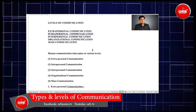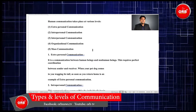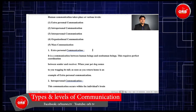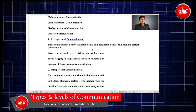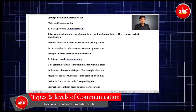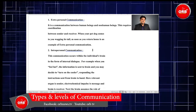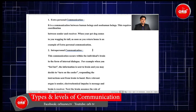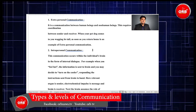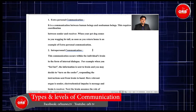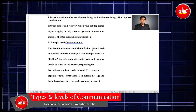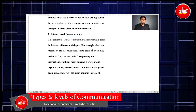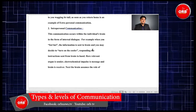Levels of communication: Human communication takes place at various levels — extrapersonal communication, intrapersonal communication, interpersonal communication, organizational communication, and mass communication. Extrapersonal communication is communication between a human being and a non-human being, requiring perfect coordination between sender and receiver. For example, when our pet dog comes to you wagging its tail as soon as you return home, that is an example of extrapersonal communication.